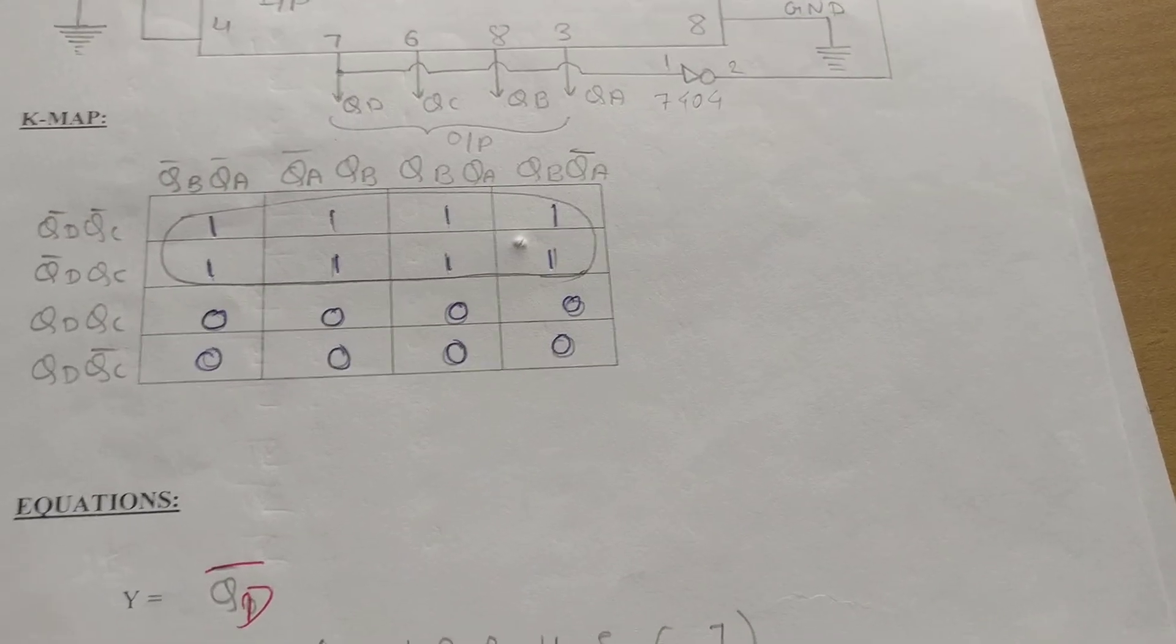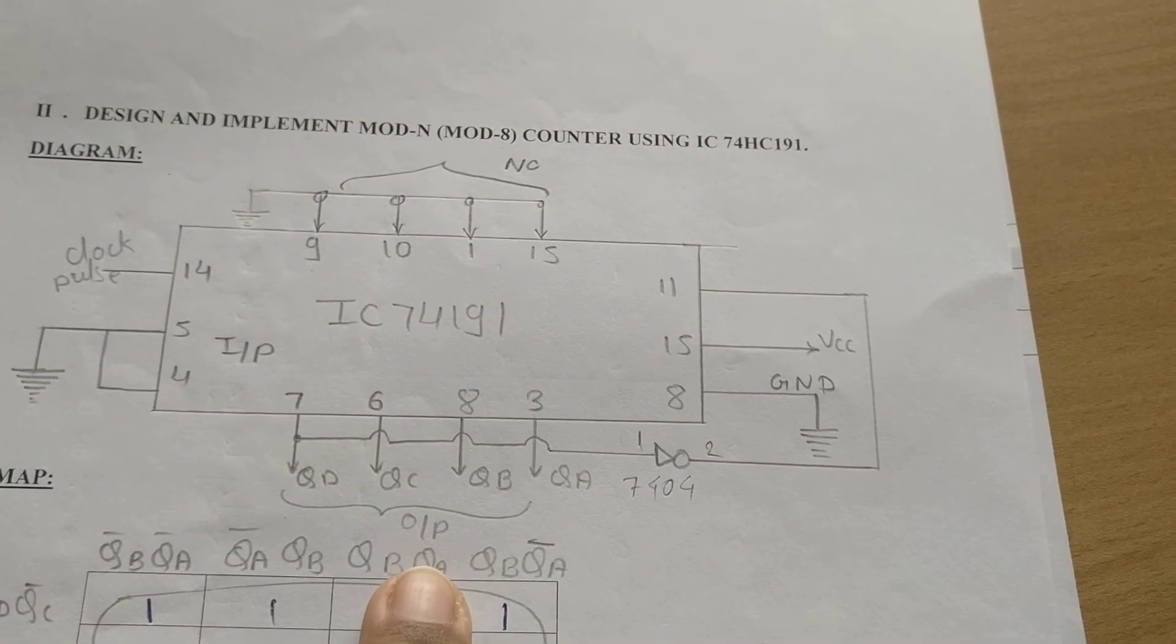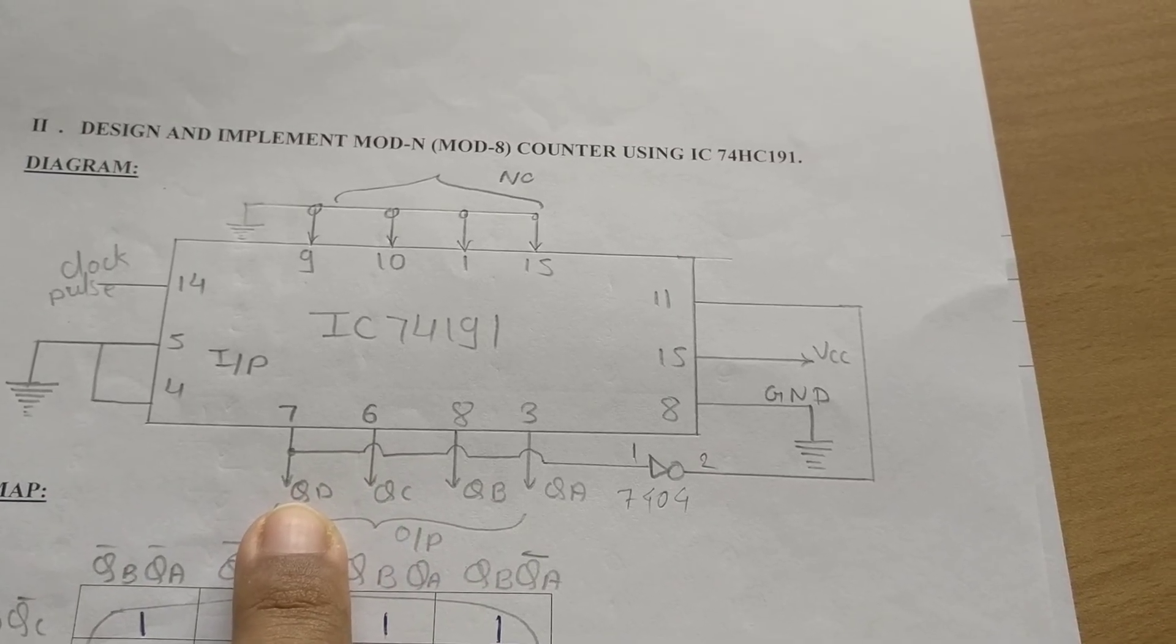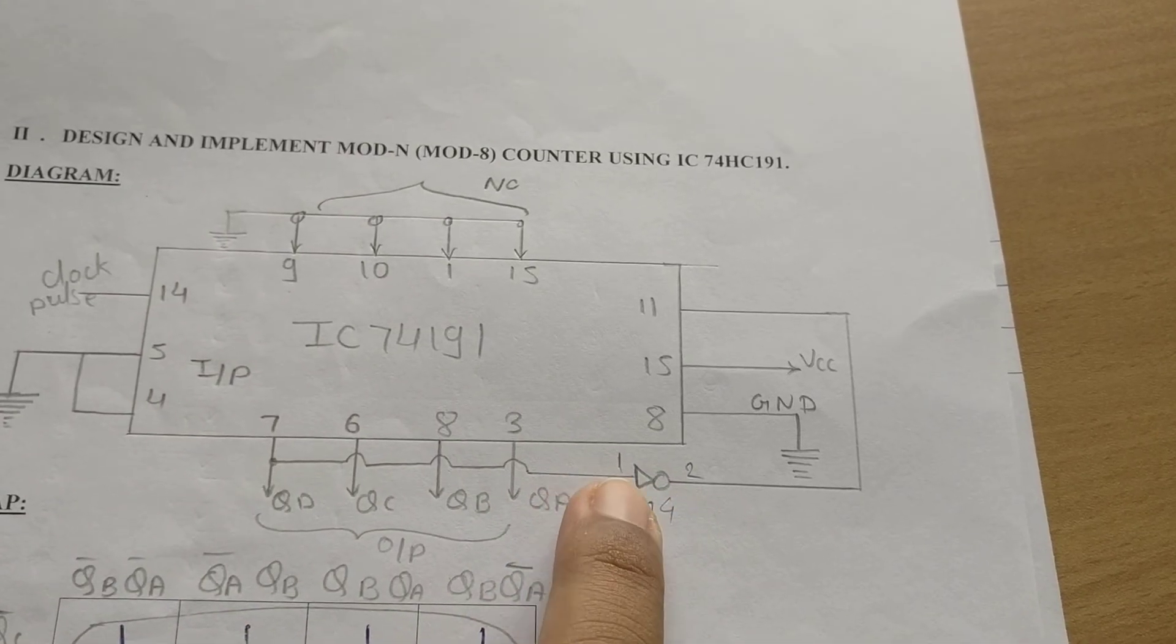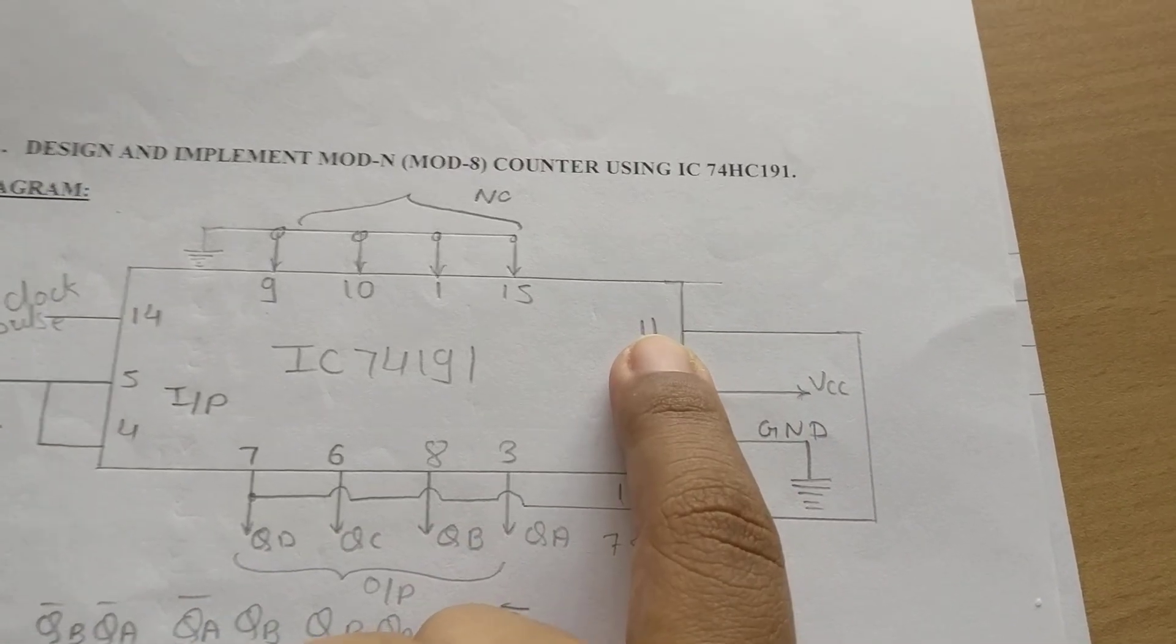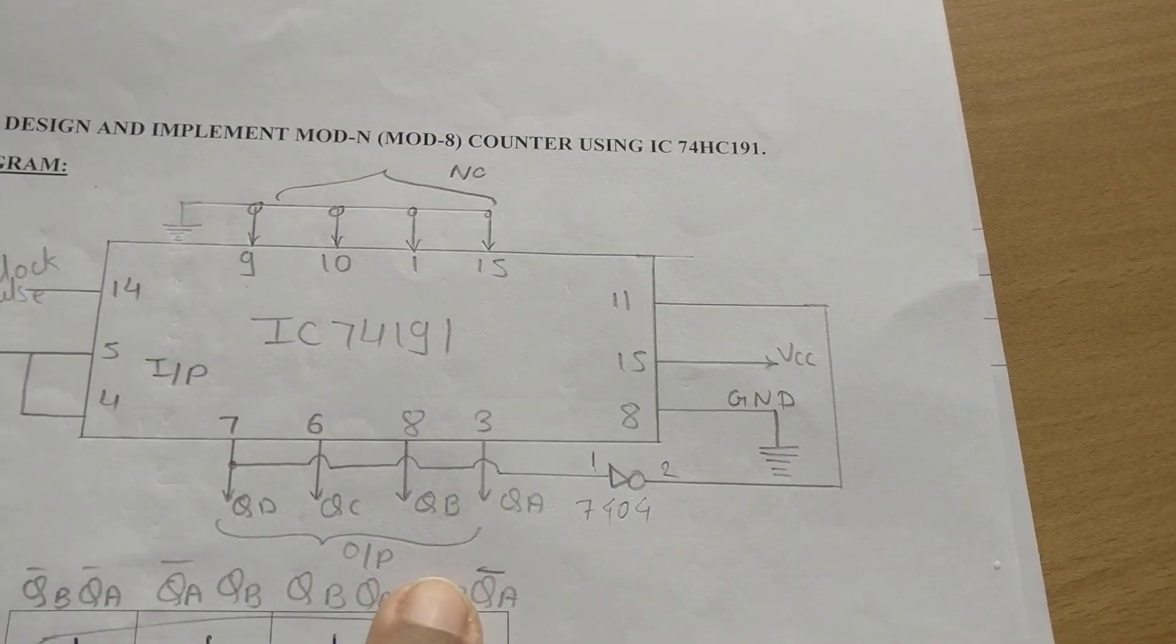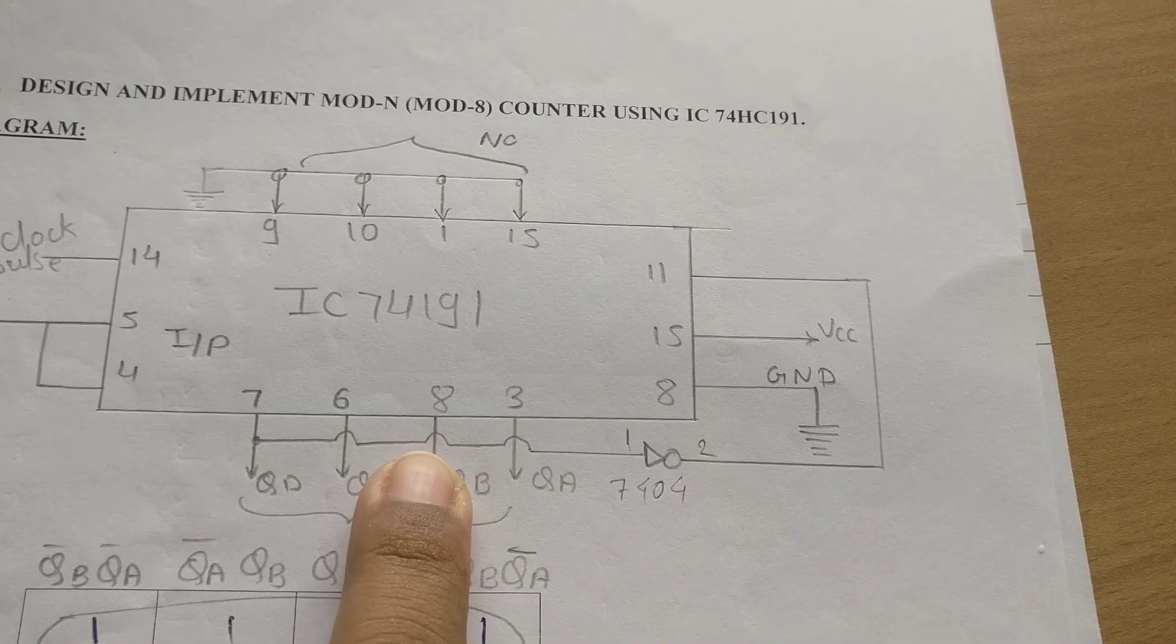Once we have got this equation, the same equation has to be implemented. This is your QD, and the equation we got is QD bar. From QD we have taken a NOT gate. QD is given to a NOT gate, you will get QD bar, and that QD bar is given to pin number 11, which is parallel load bar. This way the complete circuit will get reset and this IC will work as a mod 8 counter.